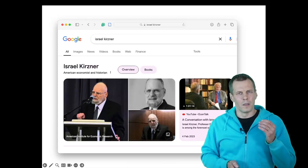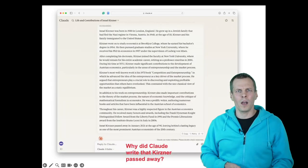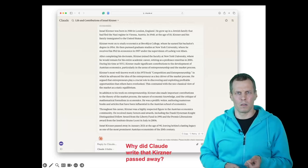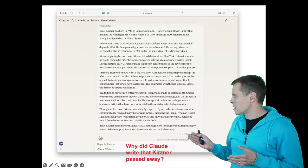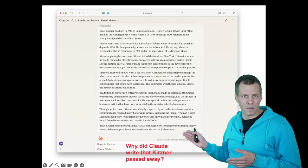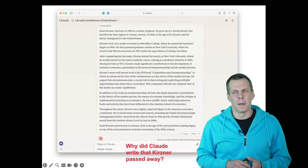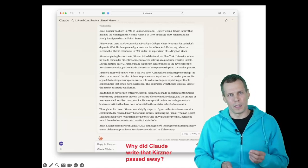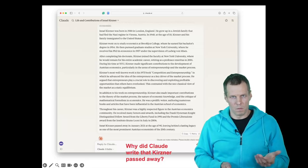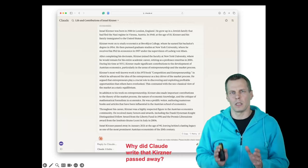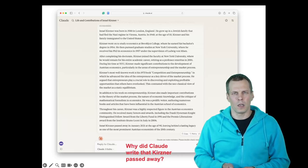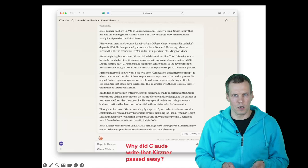So now the question is why does the large language model, Claude in this case, give us this incorrect answer that the person who is alive actually died a couple years ago? To understand why we get incorrect answers from these tools, we need to understand a bit about what they do. So let's talk about statistical prediction.